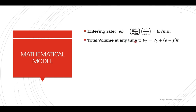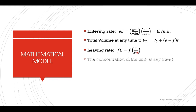The total volume at any time t will be the initial volume plus the remaining solution. To get the remaining solution, we multiply the difference between the rates by the time. The leaving rate is the rate out multiplied by the final concentration. The concentration at any time t is the amount at any time divided by the total volume.